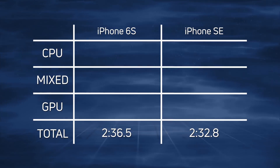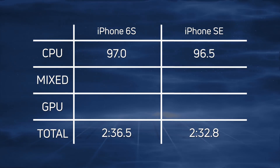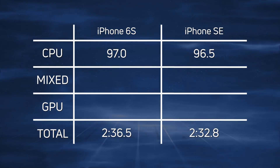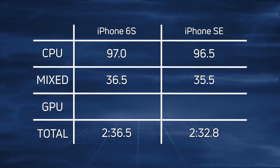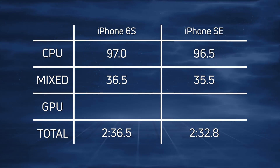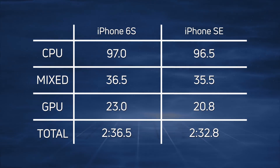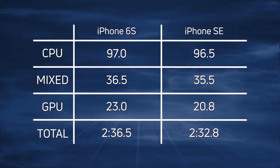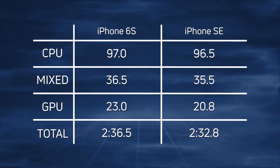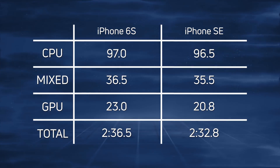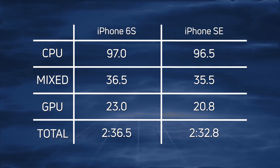Looking at the differences: CPU time was 97 seconds for the iPhone 6s versus 96.5 seconds for the iPhone SE. For the mix CPU/GPU test, 36.5 seconds for the iPhone 6s versus 35.5 seconds for the iPhone SE. The real difference was gained in the GPU test — 23 seconds for the iPhone 6s versus 20.8 seconds for the iPhone SE. Adding all those times, the iPhone SE is the winner with 2 minutes 32.8 seconds.